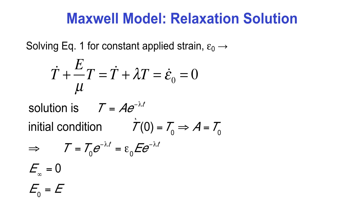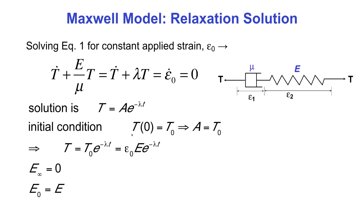What is t naught? Looking at our model — a spring in series with a dashpot — instantaneously all the strain epsilon naught will be in the spring. Therefore, the instantaneous stress t naught equals epsilon naught times e, the elastic modulus. So t naught equals epsilon naught e.